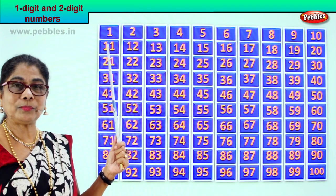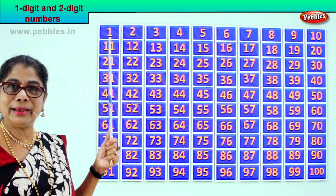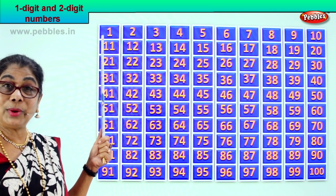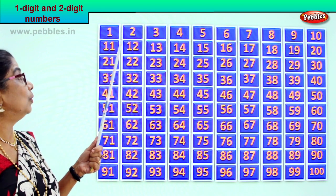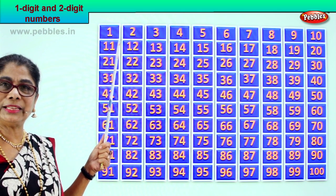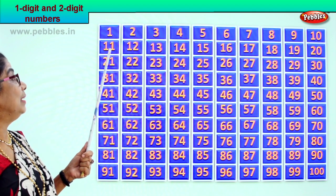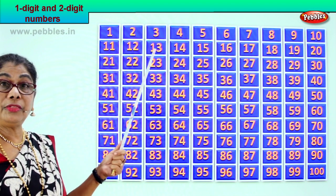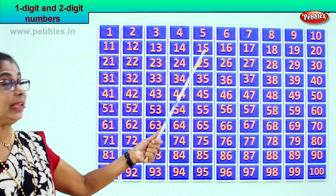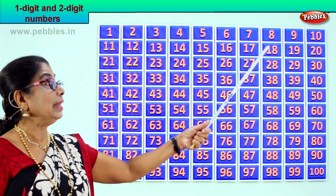Now we go to the next number: 1 and 1 — that is 11. This is a two-digit number. Now look at 12: 2 in the ones place, 1 in the tens place — 12, two-digit number. So you have 11, 12, 13, 14, 15, 16, 17, 18, 19.